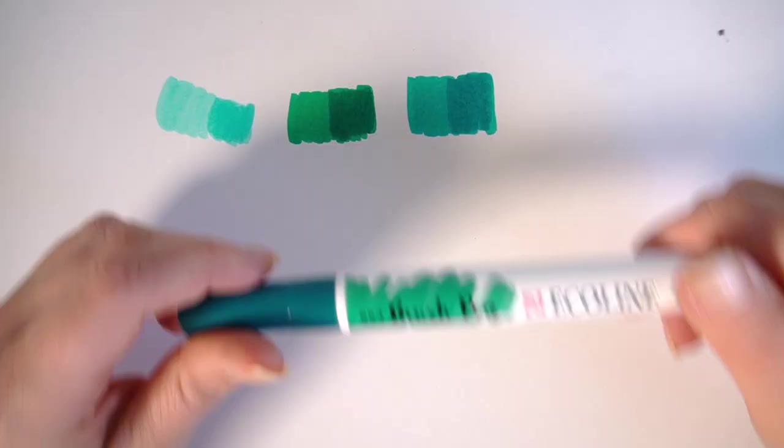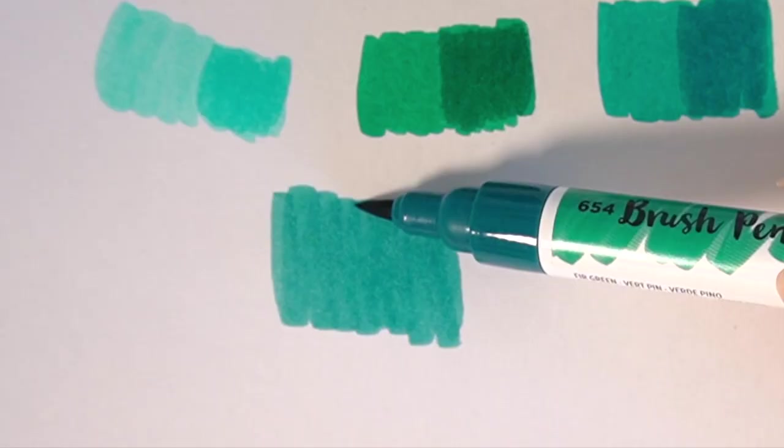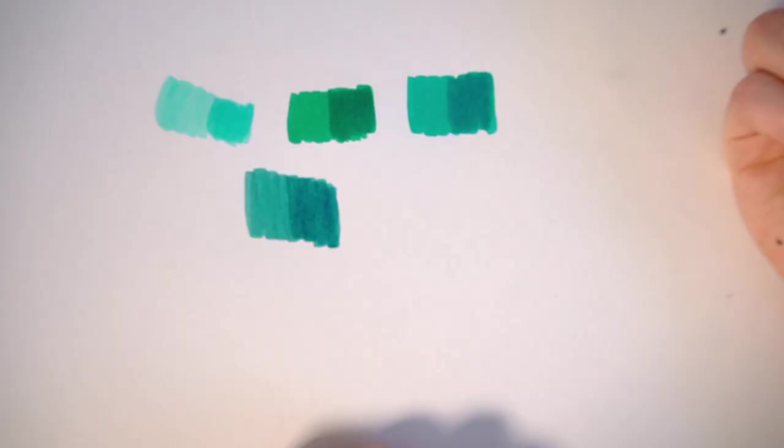Okay, now for the fir green, which is 654. I would say this one is almost more of a bluish green. Let's go over with a second layer. Really pretty.